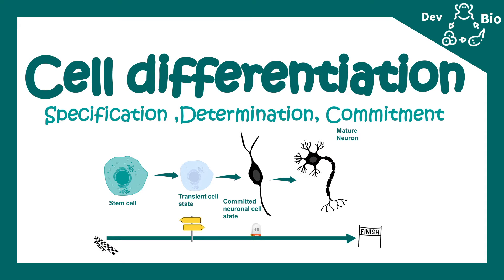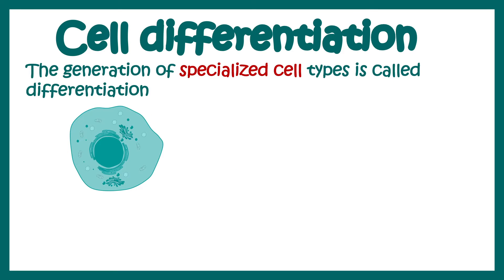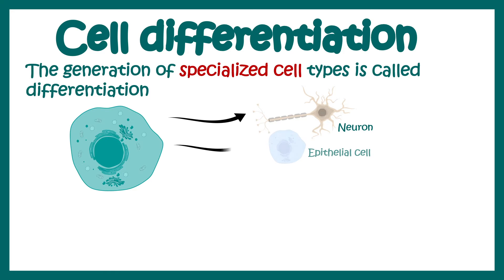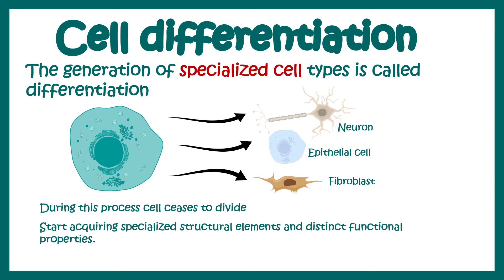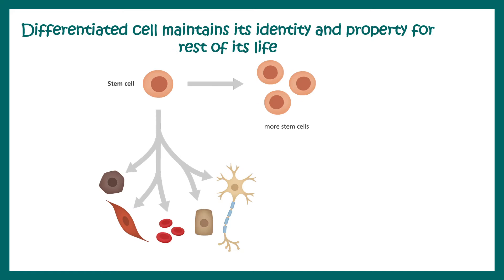In this video we'll talk about the concept of cell differentiation, a fundamental concept in developmental biology. We will learn the concepts of specification, determination, and commitment. Cell differentiation is a process of generating a specialized cell from a stem cell — it can ultimately become a neuron, epithelial cell, or fibroblast. During differentiation, the proliferation or division process of the cell ceases and it acquires structural and distinct functional elements that govern its properties.